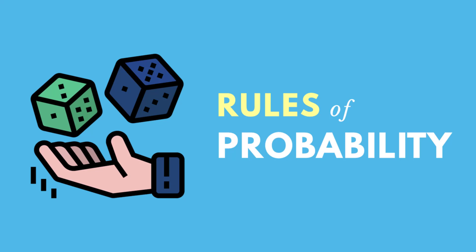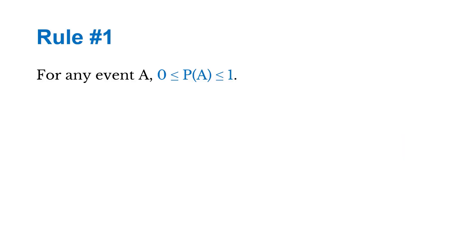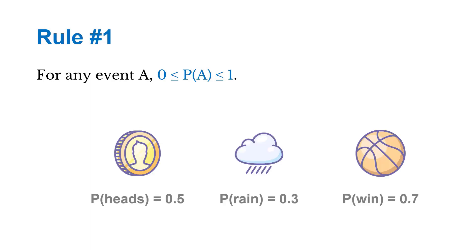Let's talk about five basic rules of probability. First, for any event A, the probability of that event is going to be greater than or equal to zero or less than or equal to one. So as a few examples, the probability of tossing a coin and getting heads is 0.5 or 50%. The probability of getting rain is maybe 0.3 on a given day. Or the probability of winning a basketball game is maybe 0.7.